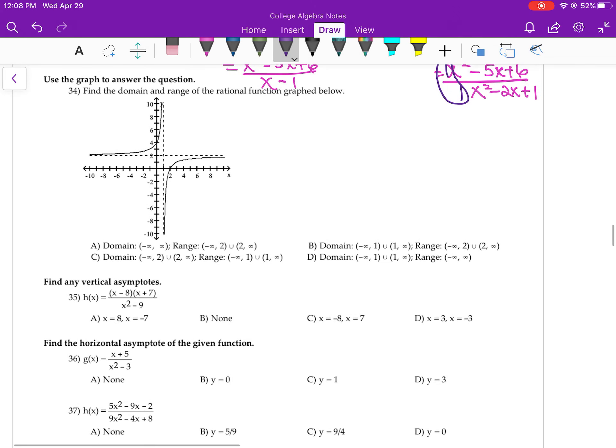34. Domain and range. So my X's seem to approach 1 on the left and the right. So the answer there is not A and it's not C. It's either B or D. The range, they approach 2 from both sides, so I'm going to go with answer B.